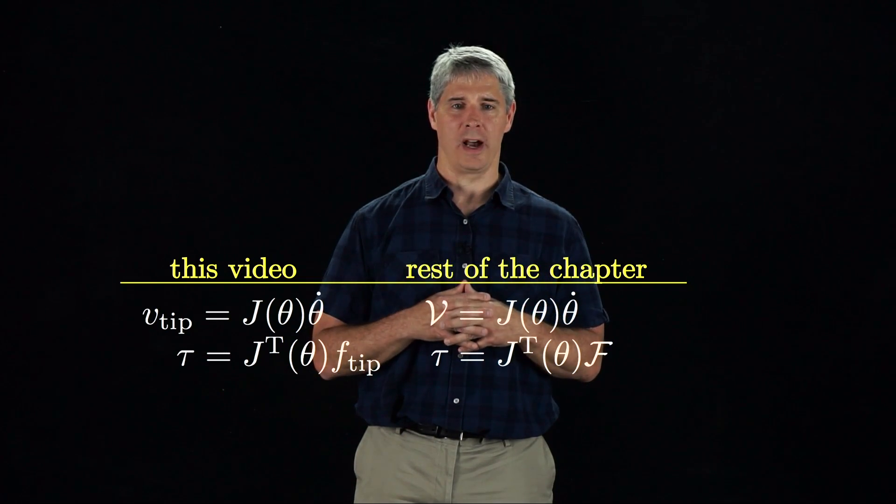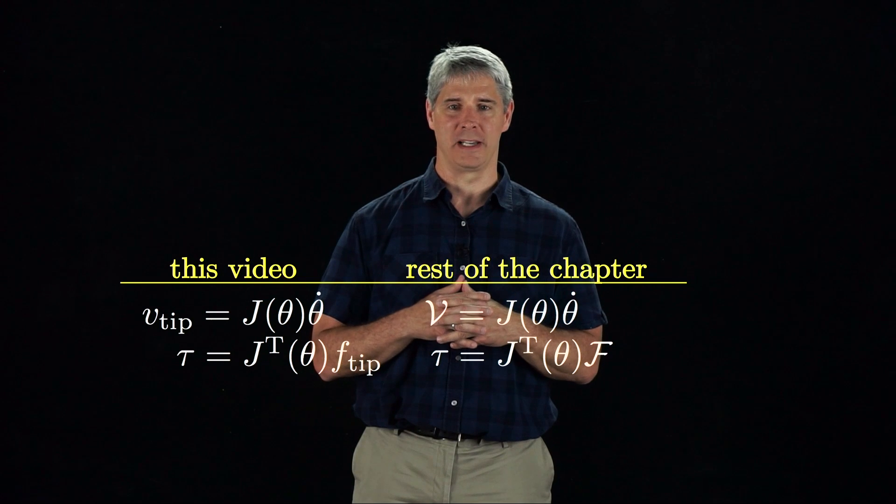In the next video, we derived Jacobian when the end effector velocity is expressed as a twist in the space frame S.